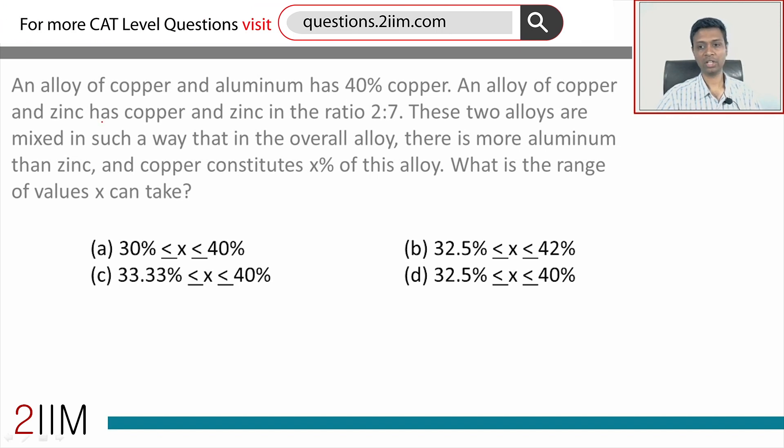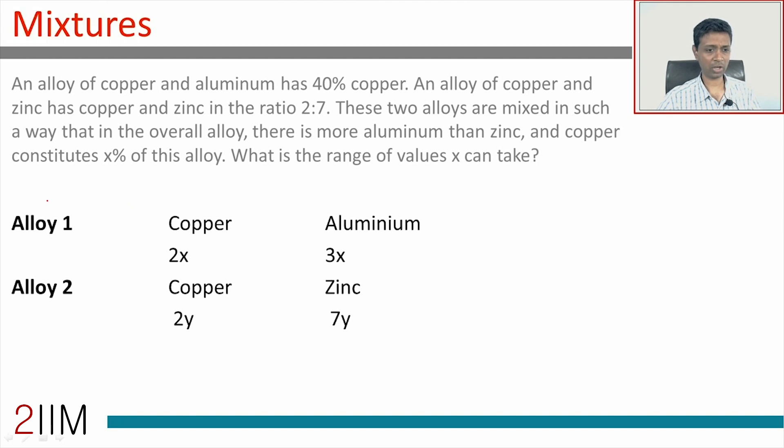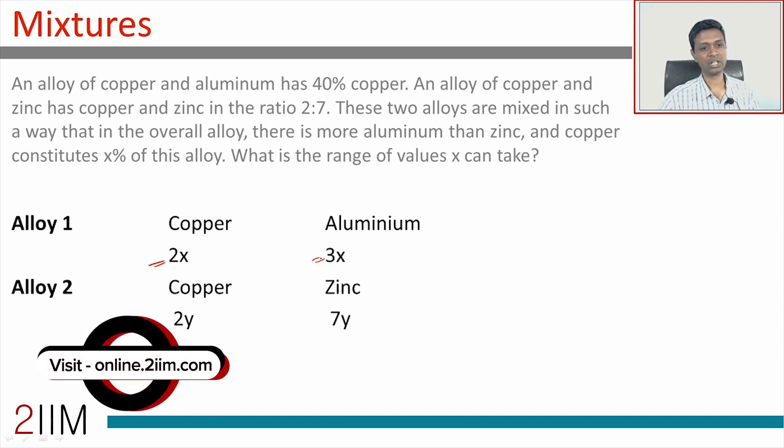Copper constitutes x percent of this alloy. What are the range of values x can take? Such a complicated sounding question, but very doable. Let's think about this step by step. The first alloy which has 40 percent copper has 60 percent aluminum, this is 2x and 3x. The second alloy has copper and zinc in the ratio 2 is to 7, so 2y and 7y. We just want to capture this as a ratio.